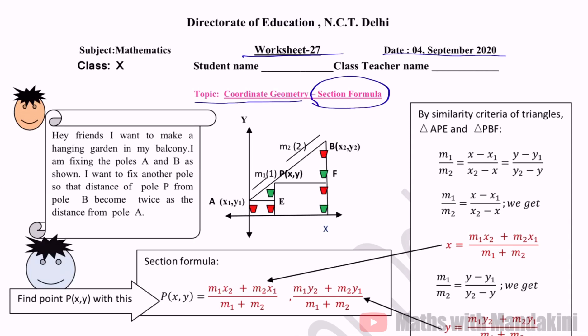Here we have given a situation. We need to fix one pole, then another pole. The distance between them - the second distance is two times the first distance. If this is one, this is two parts. So now we have to solve this. Who is Section Formula? First of all, we will derive section formula. How can we create section formula?